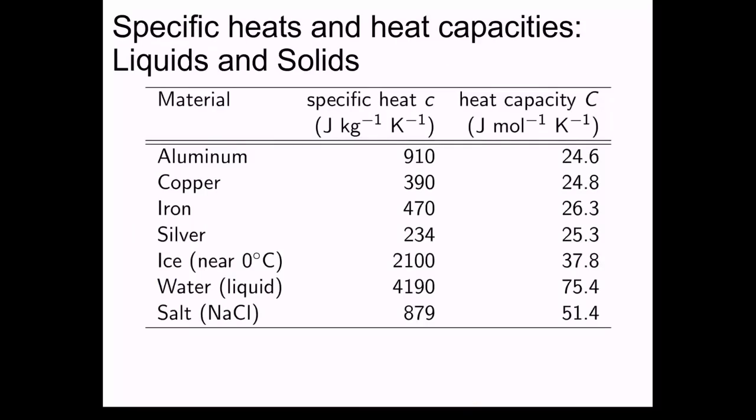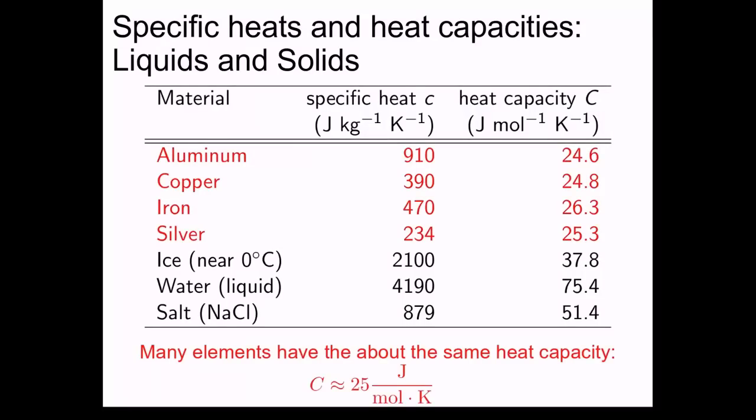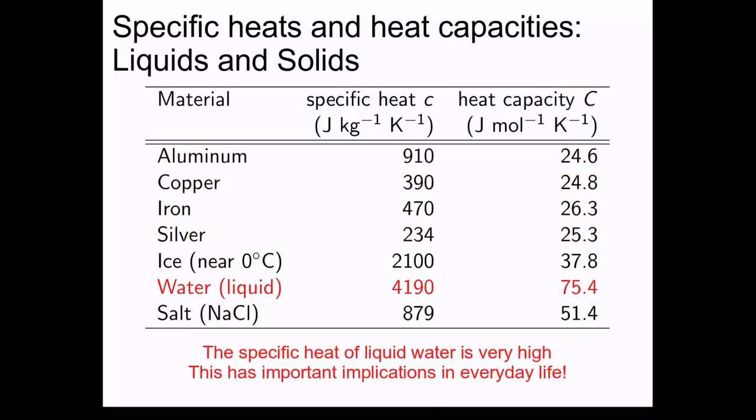Let's have a quick look at some specific heats and heat capacities for various liquids and solids. We can see some interesting trends in this table. Many elements have about the same heat capacity, about 25 joules per mole Kelvin. We can also see that the specific heat of water is very high. This fact has important implications in everyday life.